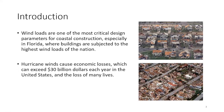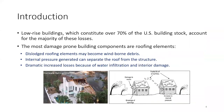Wind loads are one of the most critical design parameters for coastal construction, especially in Florida where we have the highest wind levels in the nation. Hurricane winds can cause economic losses exceeding $30 billion each year in the United States, and unfortunately loss of many lives. Over 70% of US buildings are low-rise structures like single-family residences or small commercial buildings, and these account for the majority of hurricane wind losses. Roofing elements are the most damage-prone components — if dislodged, they become wind-borne debris and can breach the building envelope, causing dramatic interior damage.